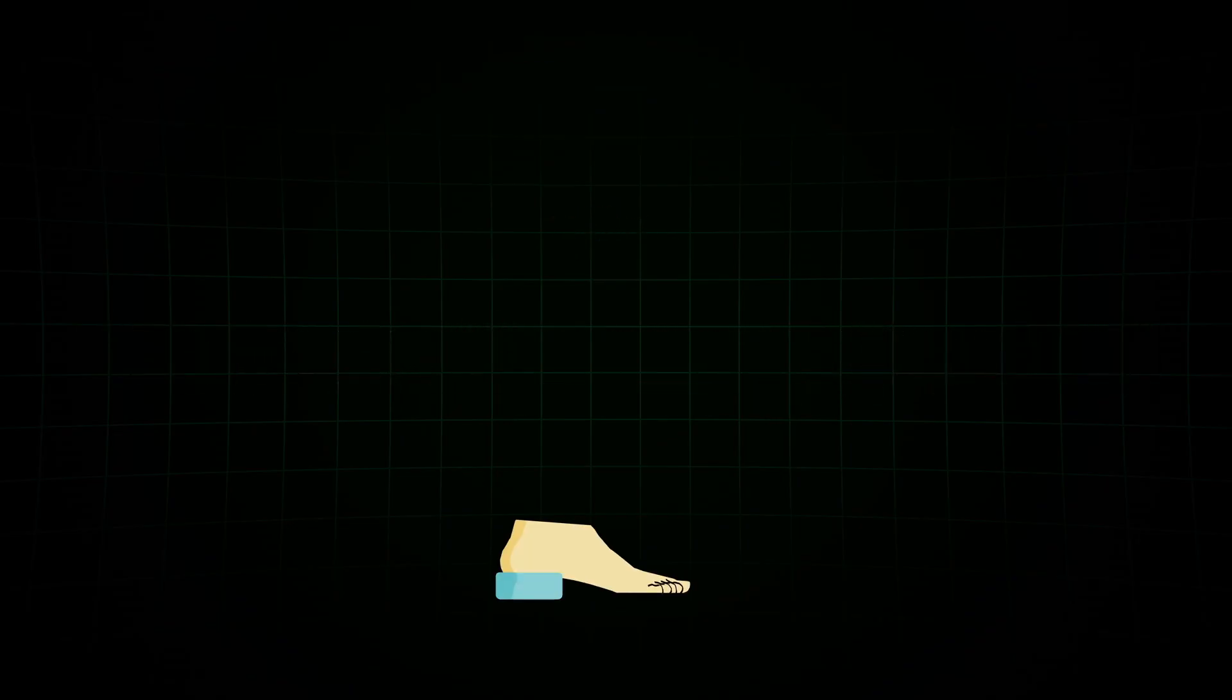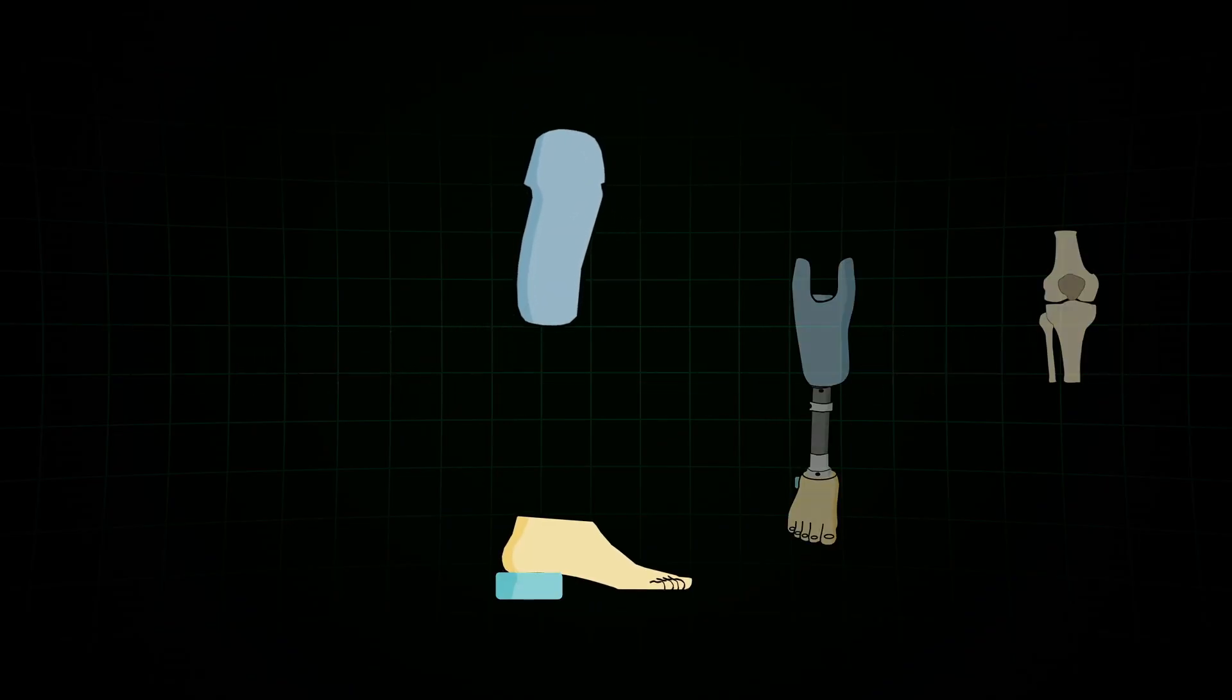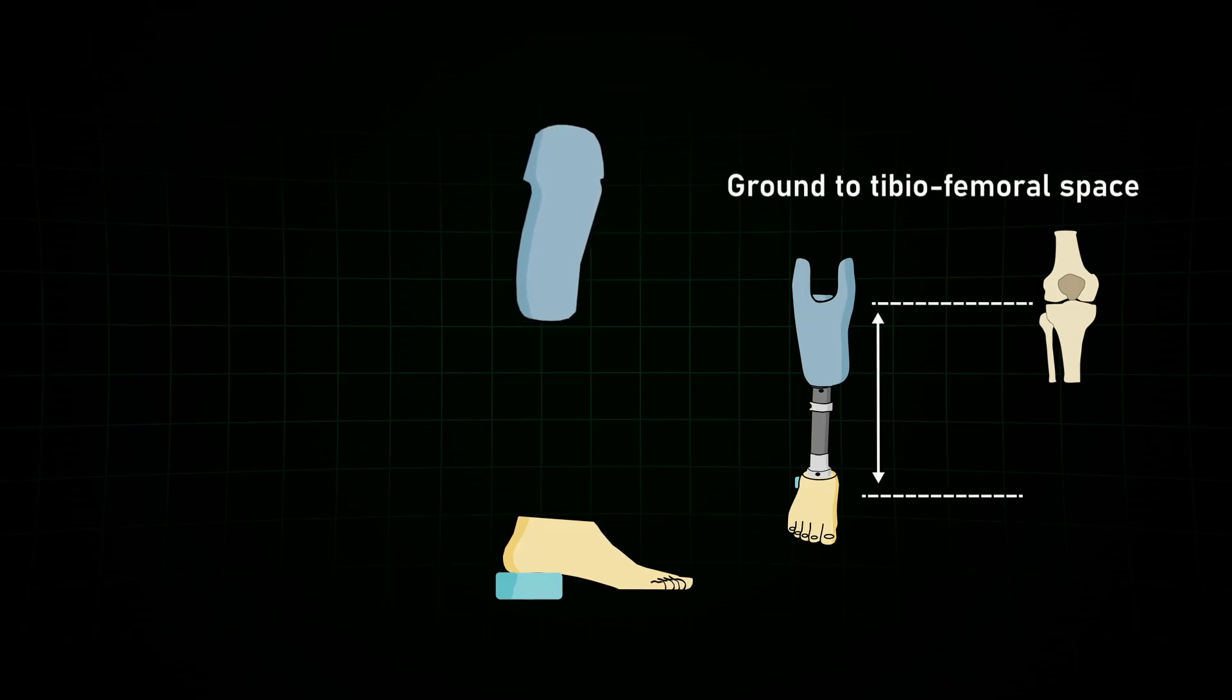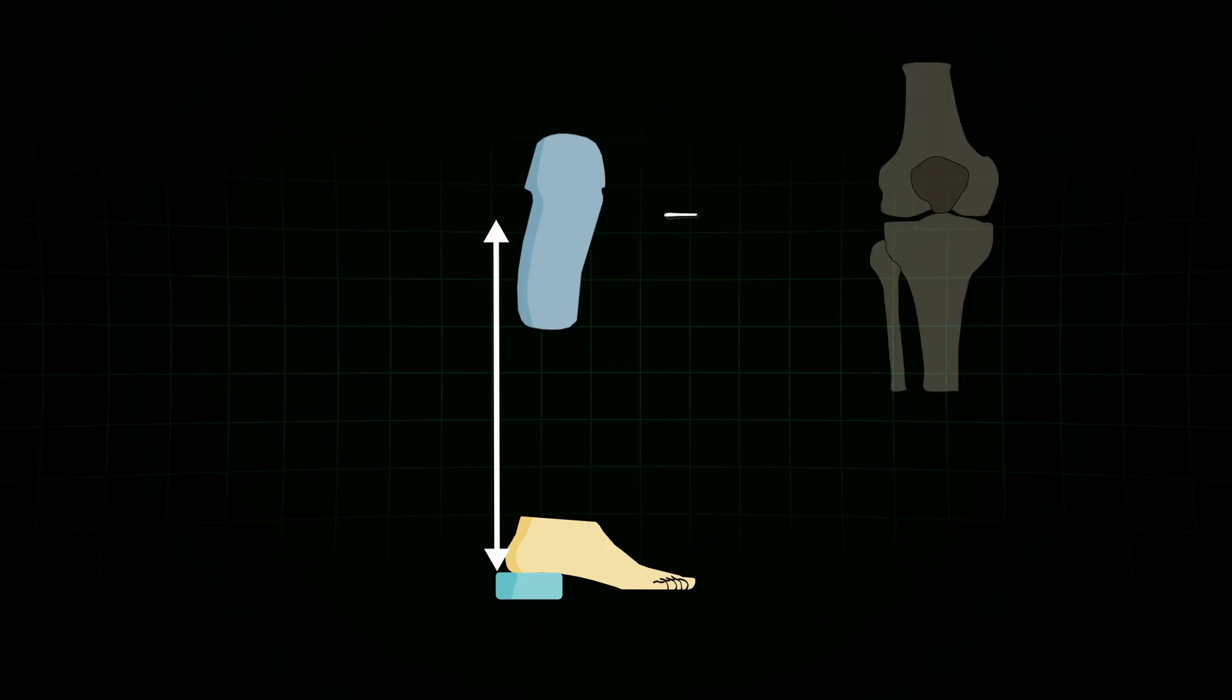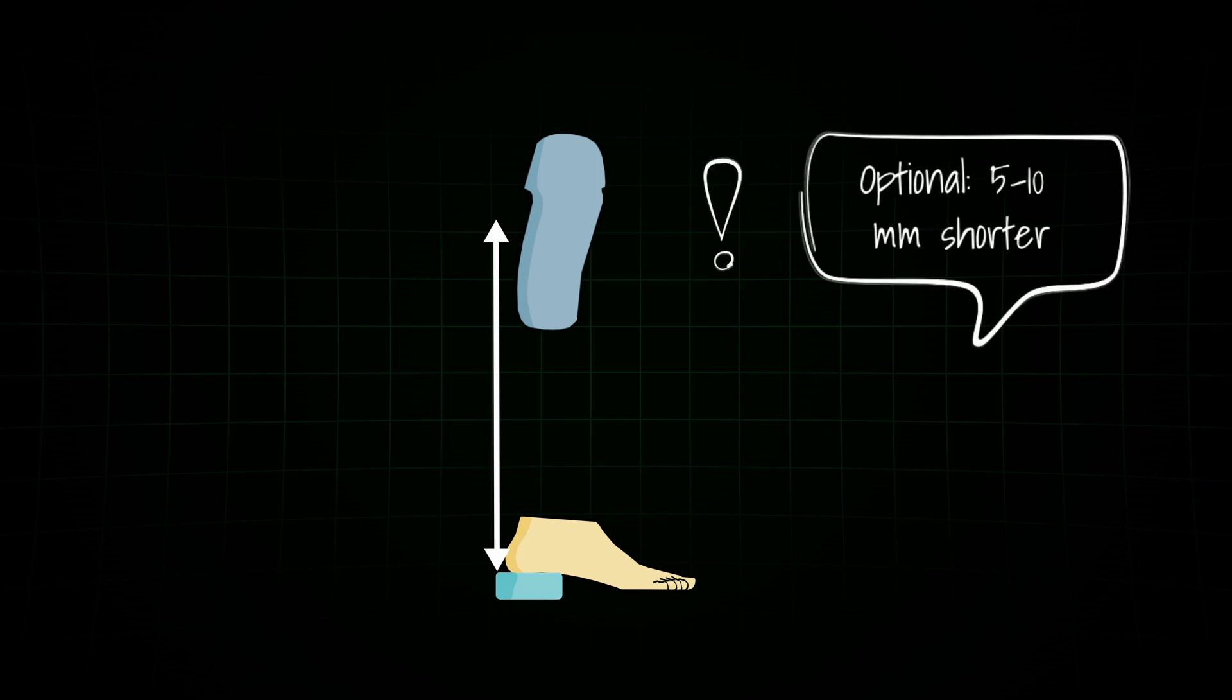Now we jump to the socket. First of all, we need the correct height. Good that you took the measurement during your casting or scanning session. In many cases, the distance from the ground to the tibiofemoral joint line is used. Just make sure to measure from the heel space that you are using. If you are measuring from the ground, you have to subtract the five millimeters we added earlier. If you are not sure, you can roughly orientate yourself on the lower edge of the patella. Some prosthetists like to reduce the height of the prosthesis for about five to ten millimeters in order to increase the toe clearance for the patient. If you are unsure, please talk to an experienced colleague.